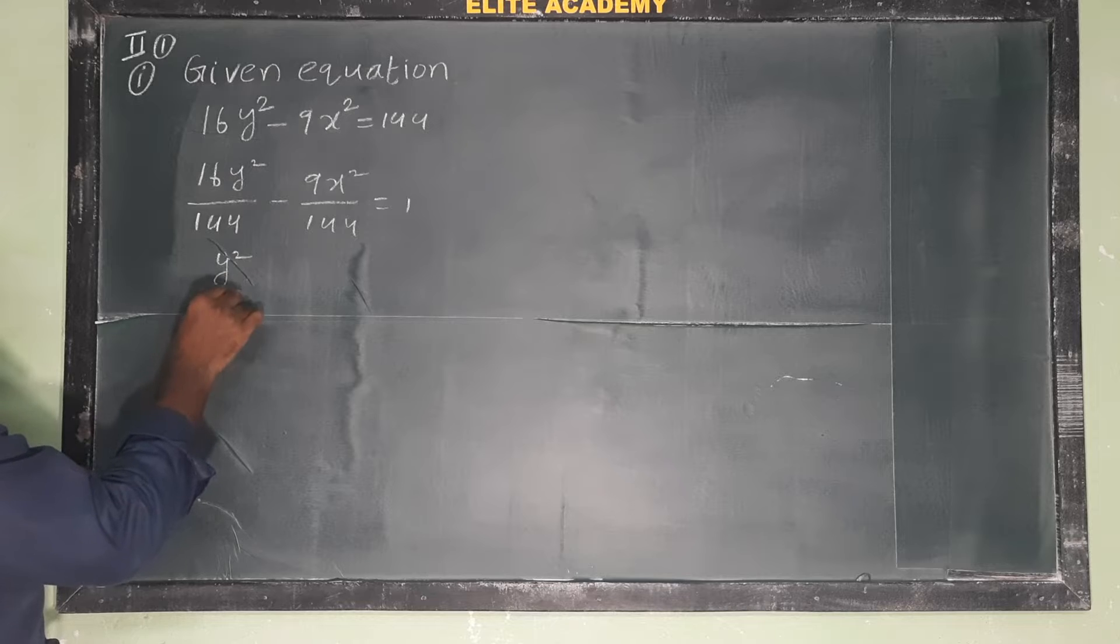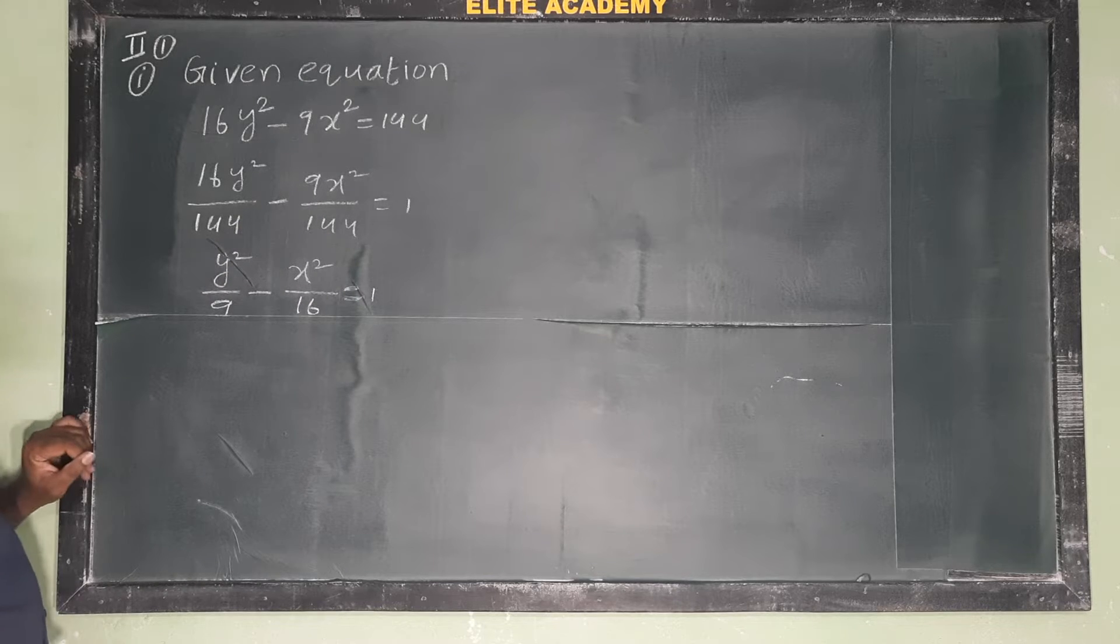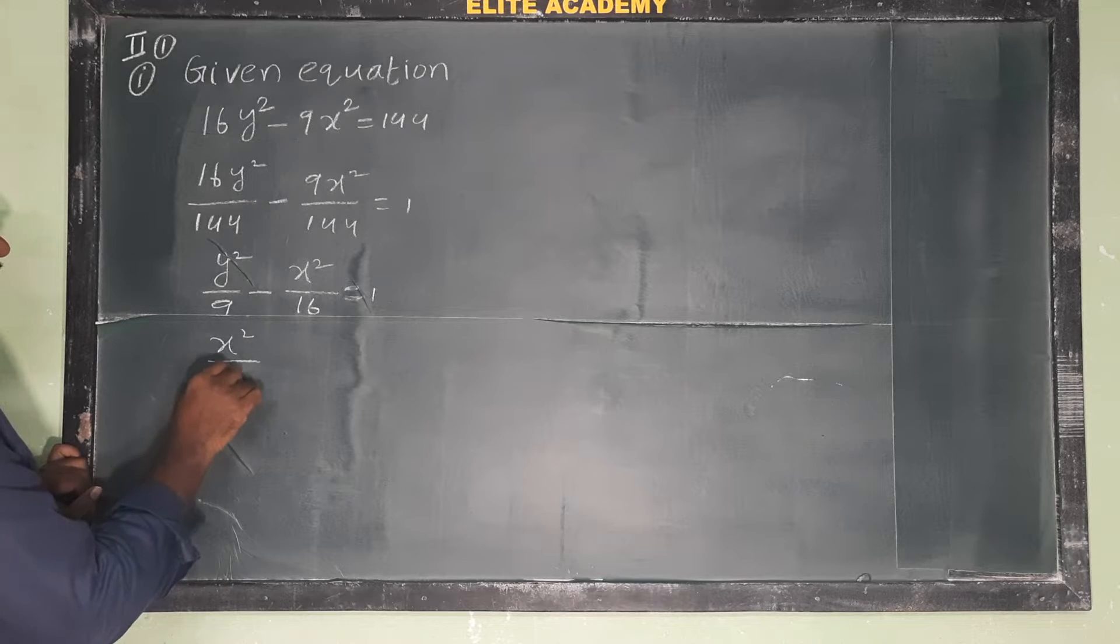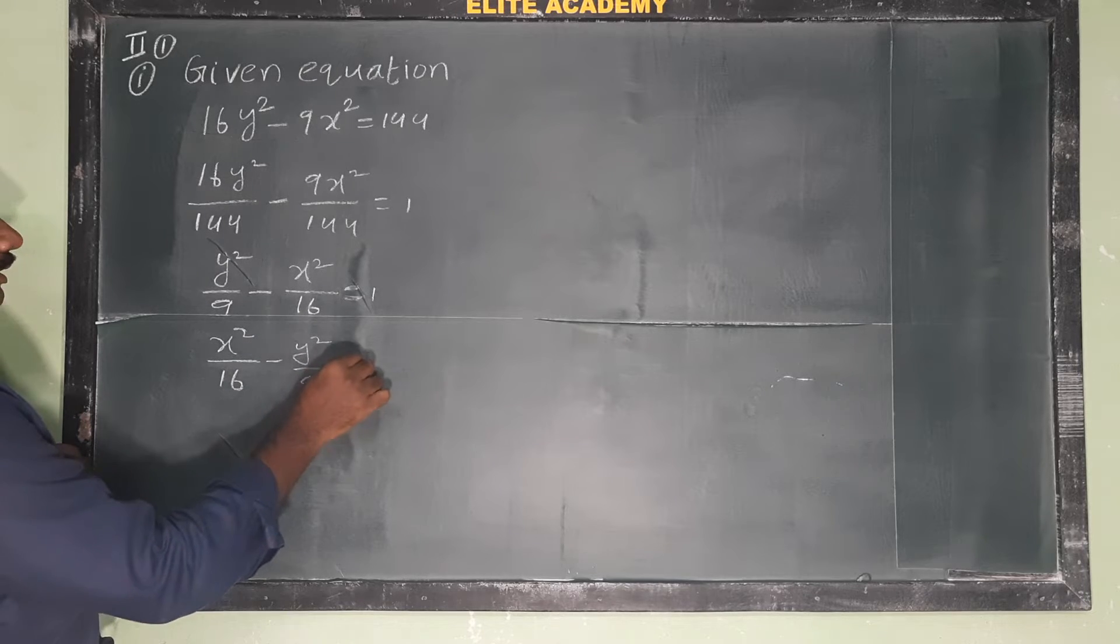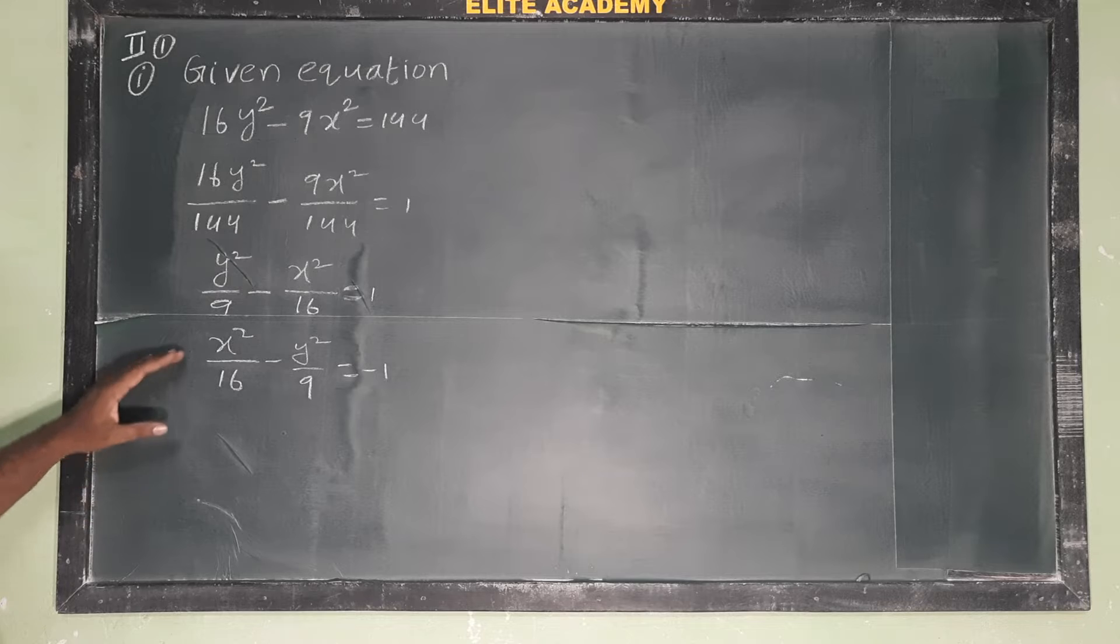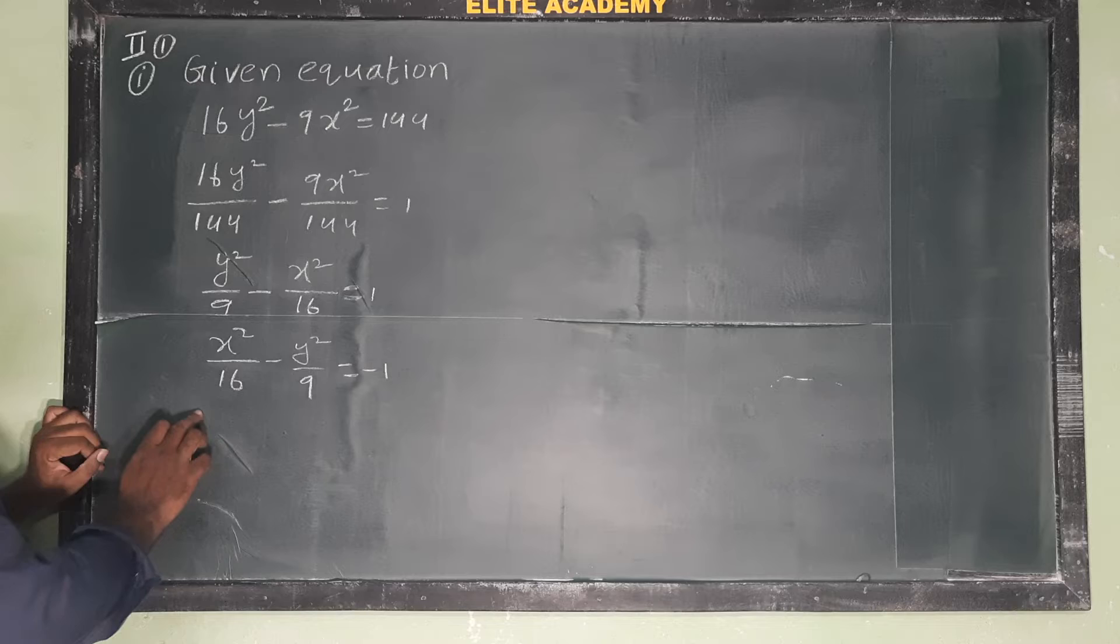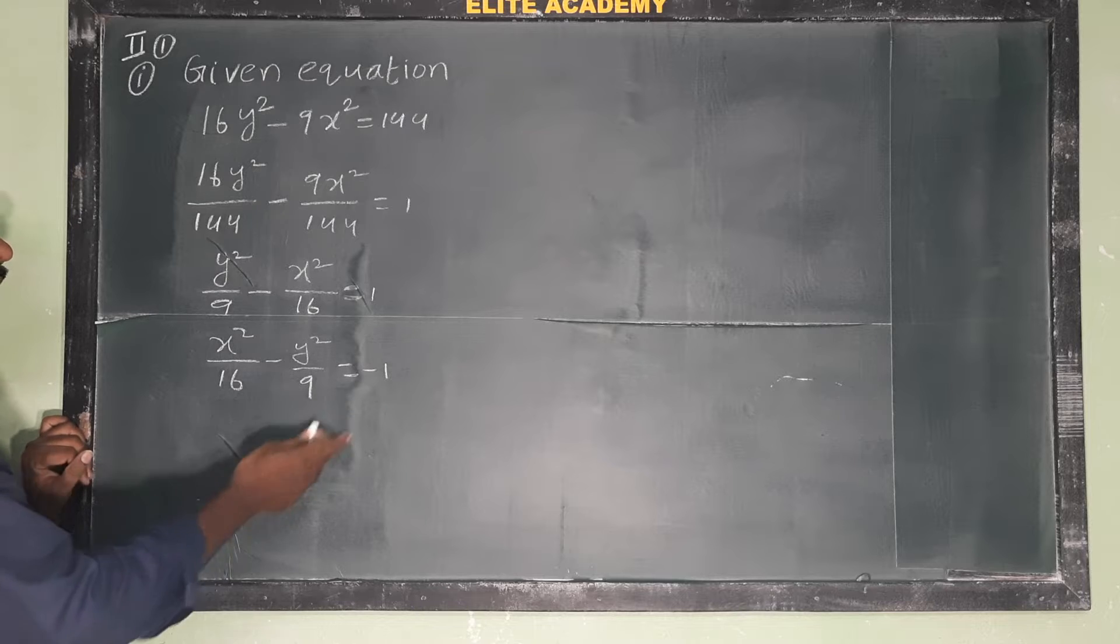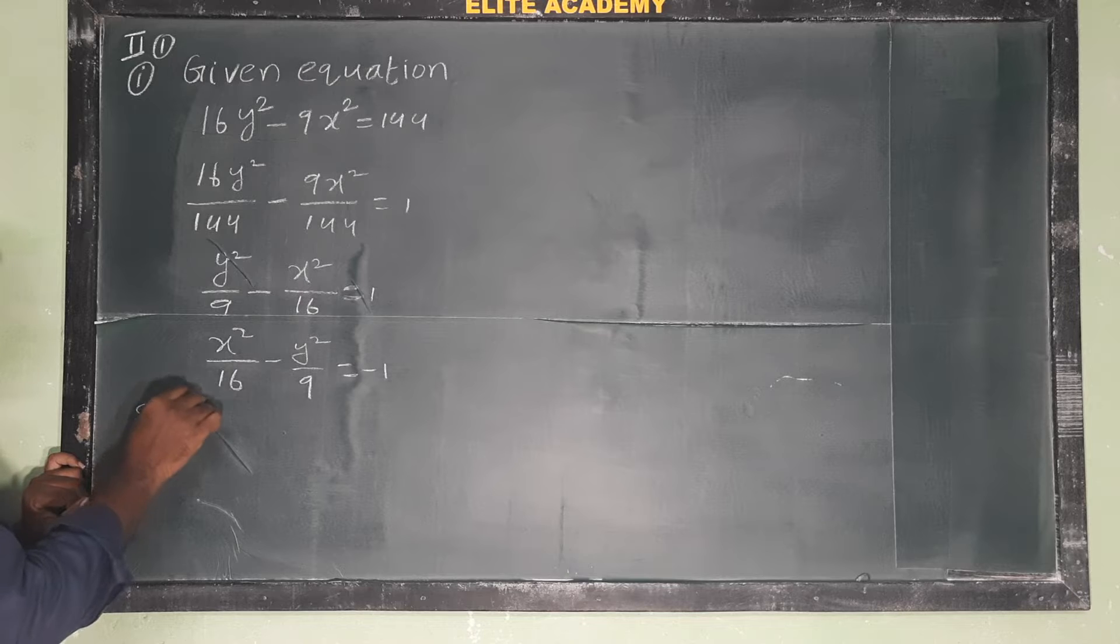Simplifying: y²/9 - x²/16 = 1. Rearranging this: x²/16 - y²/9 = -1. When the equation equals minus 1, this is a conjugate hyperbola.